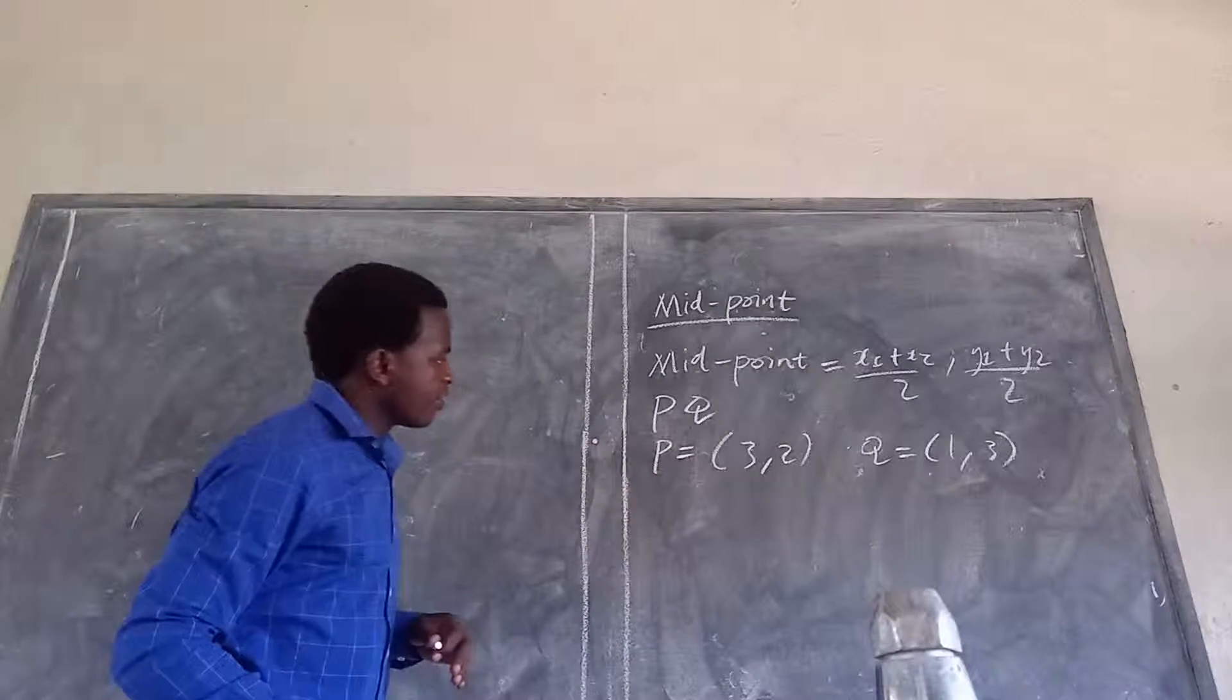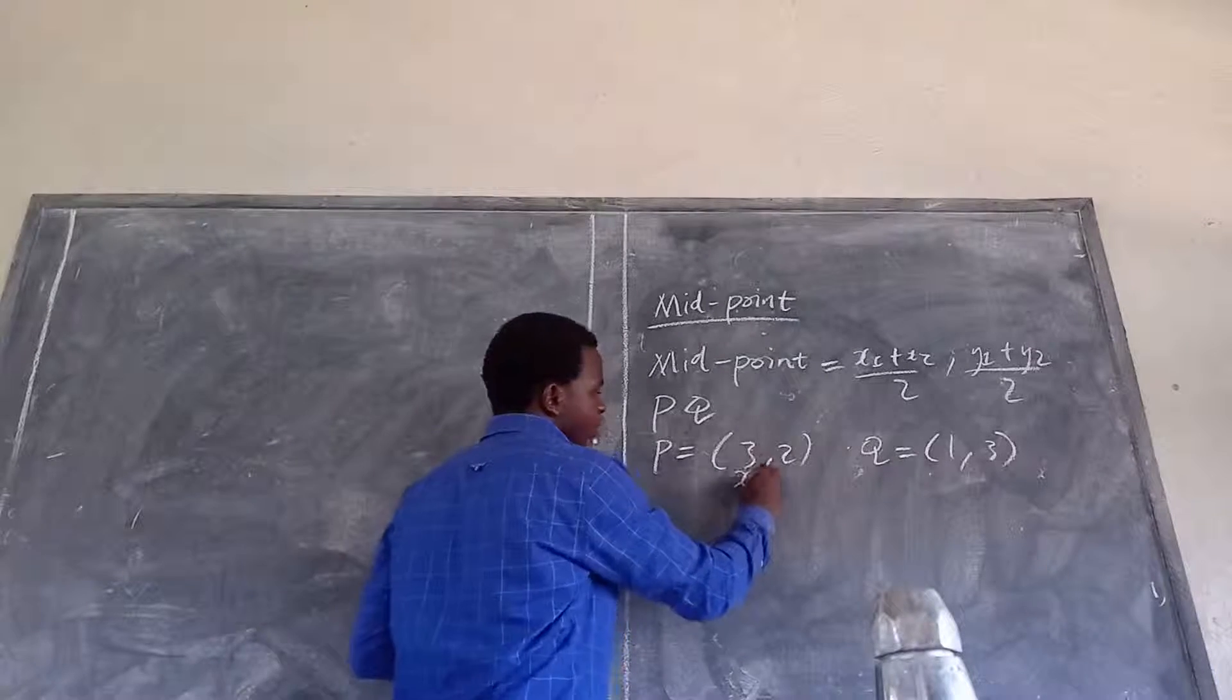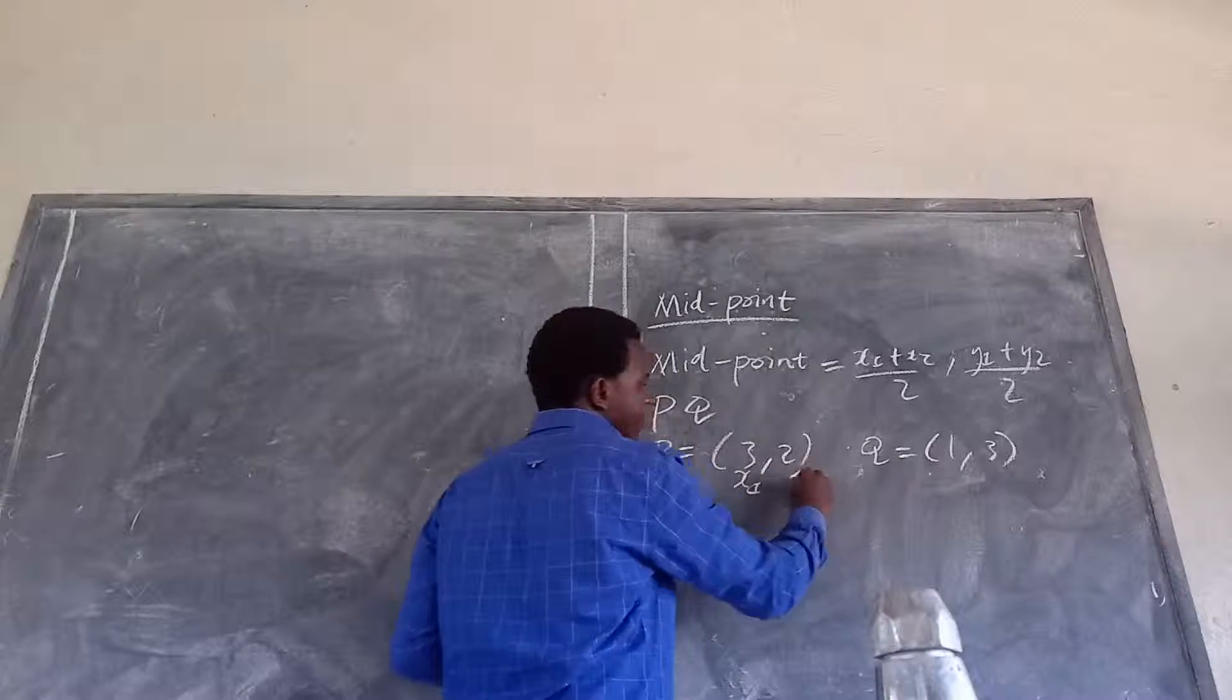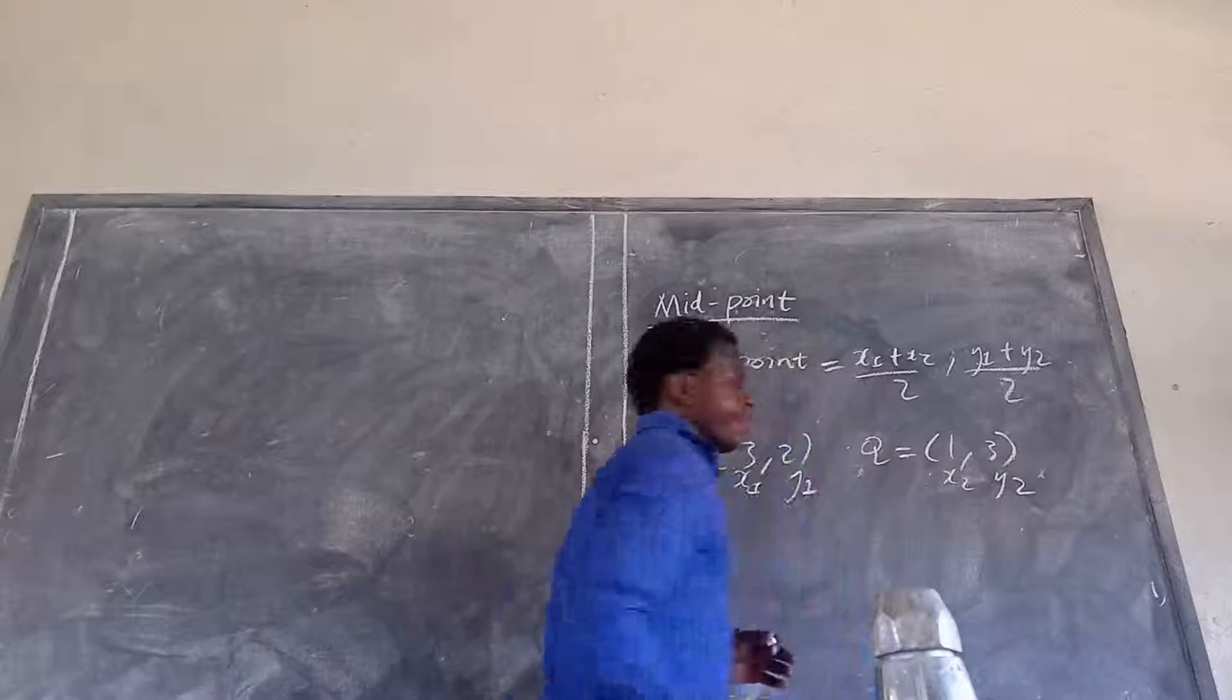for the points of P, you are going to label them as x1, y1. And the points of Q, you are going to label them as x2, y2. Then,